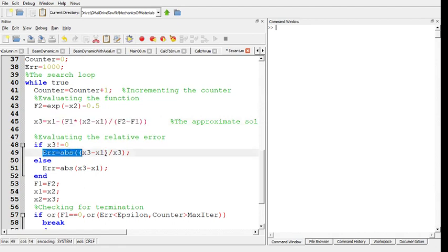Now we see the error. If X3 is not 0, we always put this condition just in case you are very unlucky and you got X3 exactly equal to 0. If not, then we get the relative error.